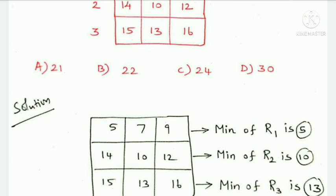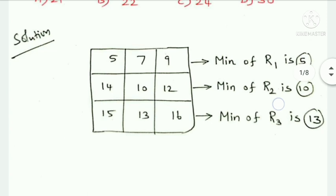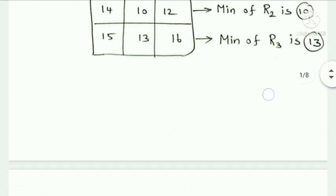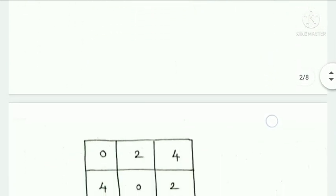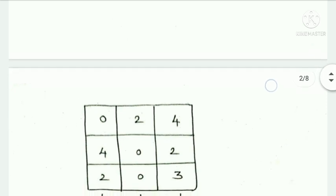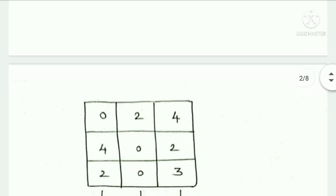After row reduction, the updated values include 15 in the third row and 3 in the second row, then 15 again. Now proceed to column reduction by subtracting 1 from each column's minimum value.